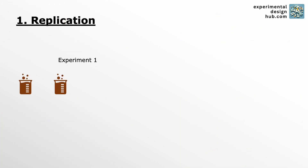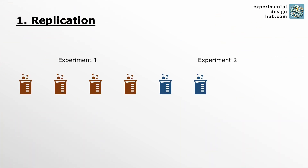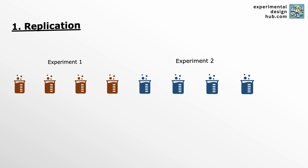Let's first look at what exactly replication, randomization and blocking is before we take a look at a couple of examples to see what impact it might have on your data. Replication means to repeat the same experiment multiple times. This repetition helps to quantify the natural variability in the data and we basically make sure that the observed effects are consistent and not random.